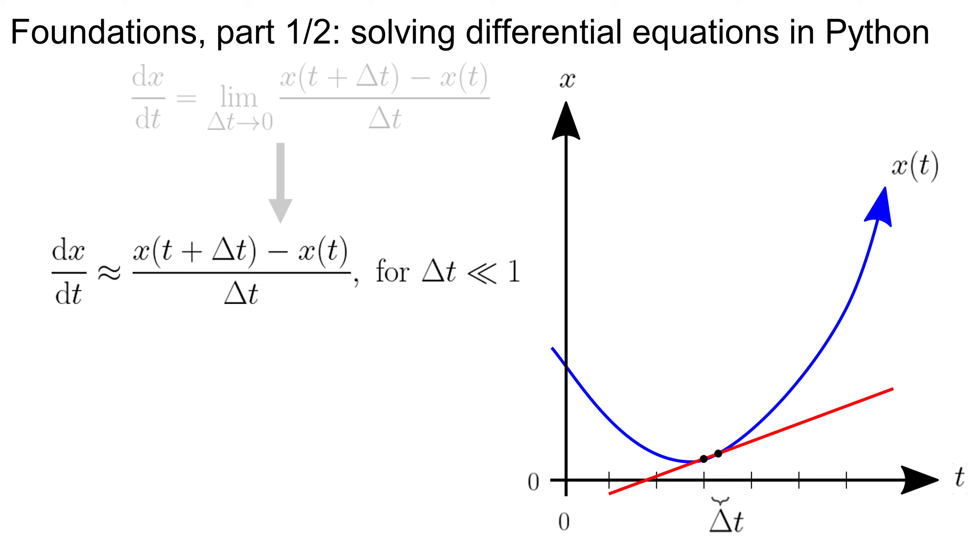Suppose we know the true value of the derivative dx/dt, and also suppose the time step delta t is small but not zero. As long as the time step is small, we can rearrange the equation on screen to approximate the future state x plus delta t, by multiplying dx/dt by the time step delta t, and then adding this result to the current state x.